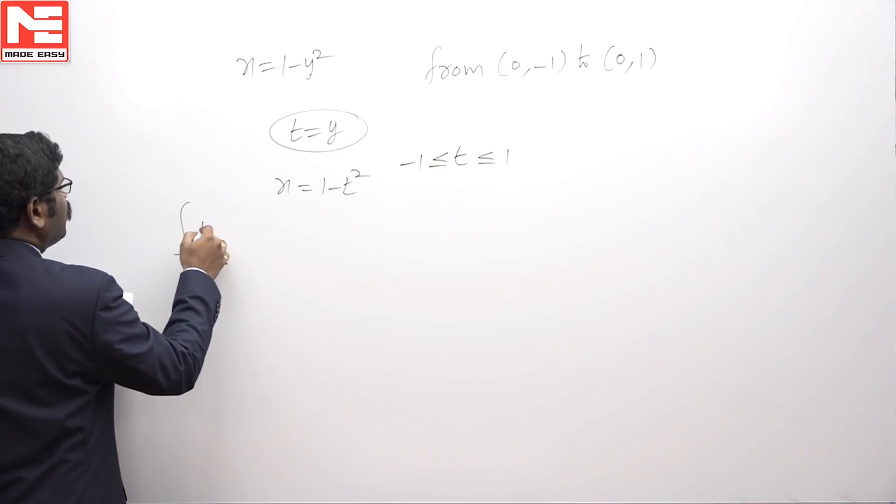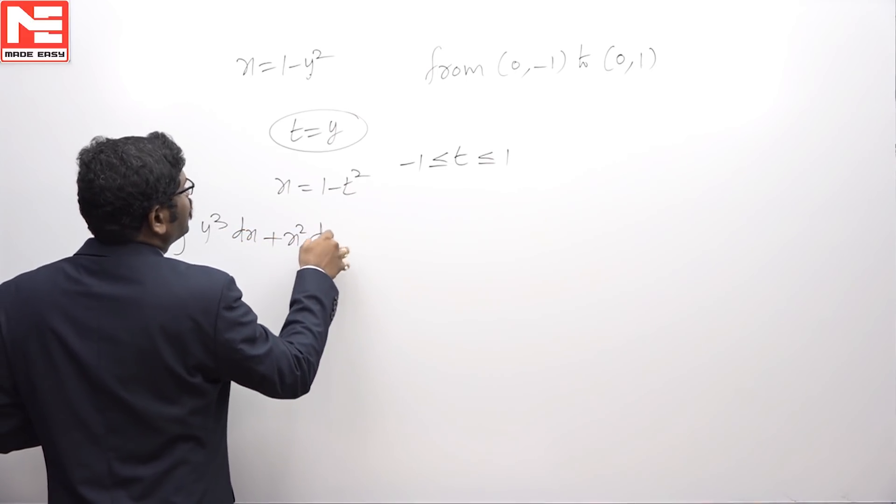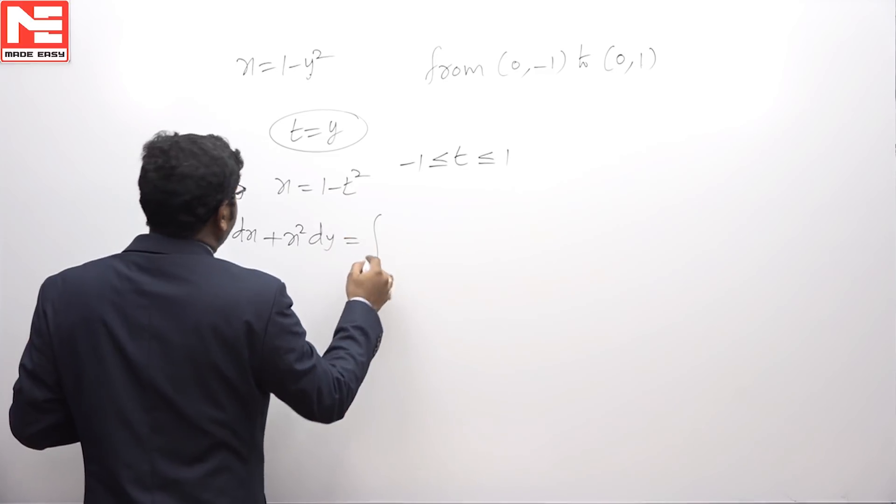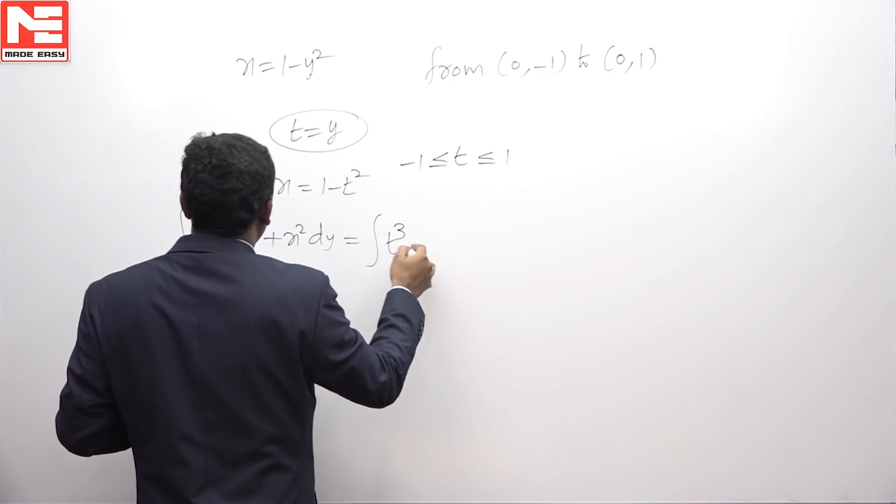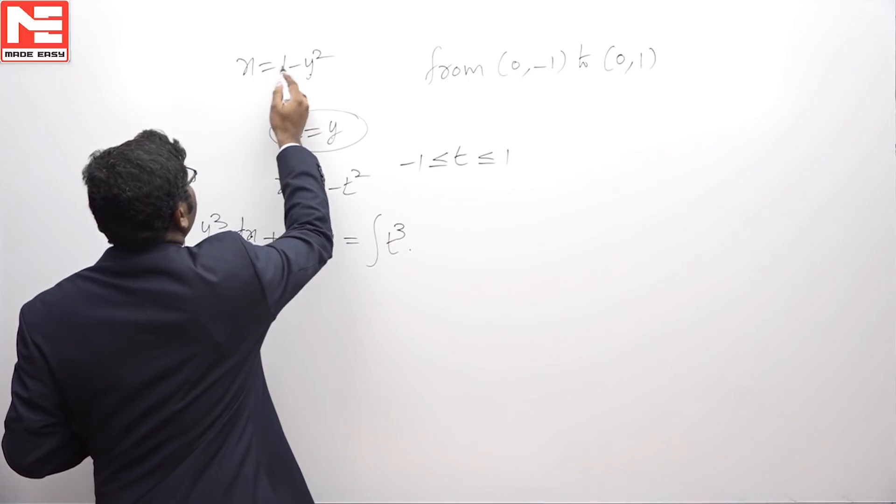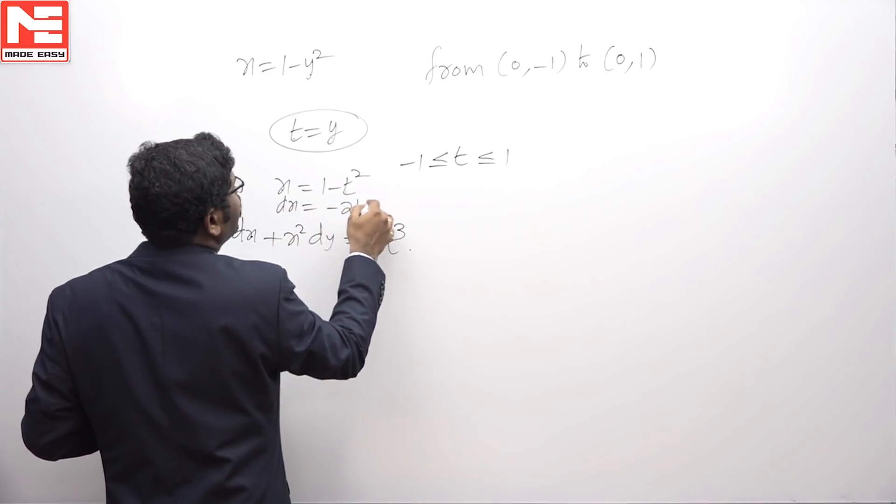The integral y³dx + x²dy becomes the integral of t³ times dx, where differentiation of x gives -2t dt.